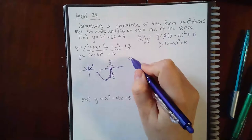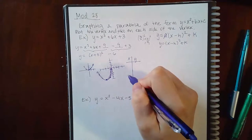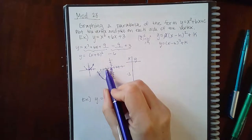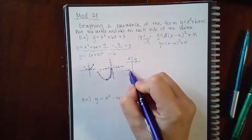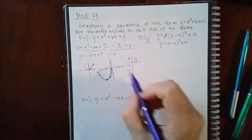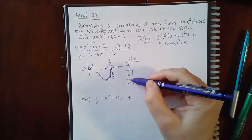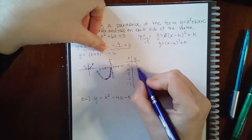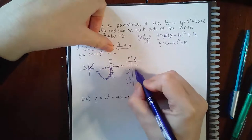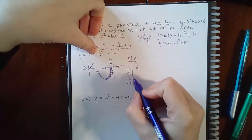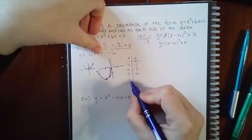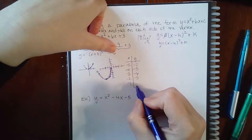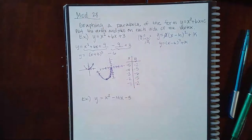Alternatively, you can make a table. Knowing that x = -3 is the center, pick two values to the left like -4 and -5, and two to the right like -2 and -1, then plug each into the equation to get y values: you get -2, -5, -6, -5, -2 respectively.